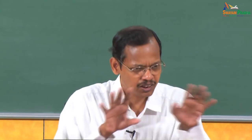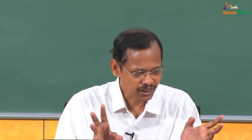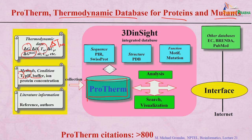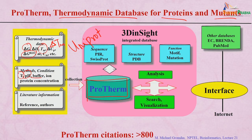For any particular protein we can see its sequence and structure, if known by X-ray crystallography or NMR spectroscopy. We provide sequence information from UniProt — earlier there were two databases called PIR (Protein Information Resource) and Swiss-Prot, which merged into UniProt. For structure, we provide the PDB ID from the Protein Data Bank.